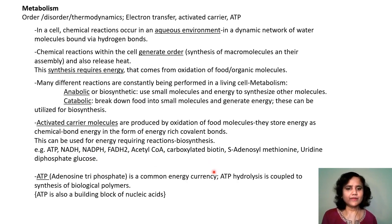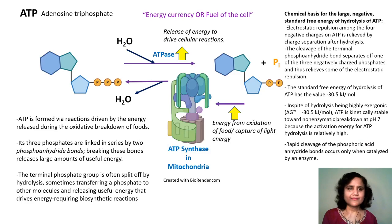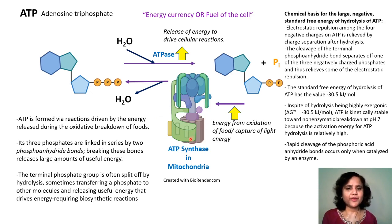ATP is a common energy currency in cells. ATP hydrolysis is coupled to synthesis of biological polymers, and ATP is also a building block of nucleic acids. ATP is formed in cells via reactions driven by the energy released during the oxidative breakdown of foods, and it is synthesized by a fascinating molecular machine termed ATP synthase, present in the mitochondria. ATP has three phosphate groups linked in a series by two phosphoanhydride bonds, and breaking these bonds releases large amounts of useful energy.